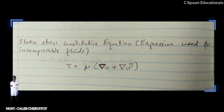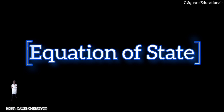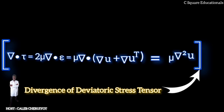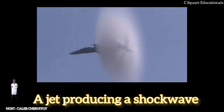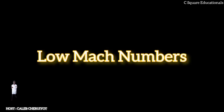The divergence of deviatoric stress is given by ∇·τ = 2μ∇·ε = μ∇²u, because ∇·(∇u^T) = 0 for incompressible fluid. Incompressibility rules out density and pressure waves like sound or shock waves, so this simplification is not useful if these phenomena are of interest. The incompressible flow assumption typically holds well for all flows at low Mach numbers — say up to Mach 0.3 — such as for modeling airflow at normal temperatures.